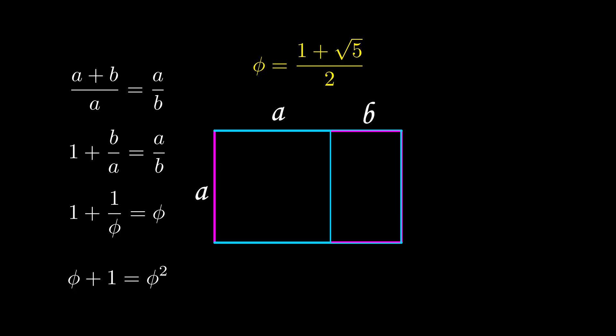Multiplying through by phi, we'll get phi plus 1 is equal to phi squared. And then we can use the quadratic formula to solve this quadratic equation. We will get two solutions, but we're looking for the positive one, which is 1 plus the square root of 5 over 2, our golden ratio.